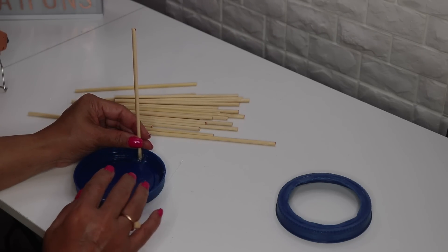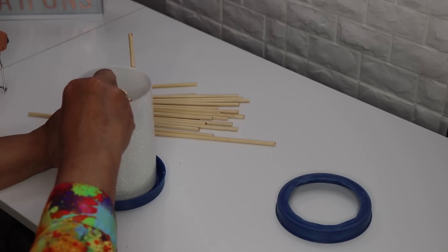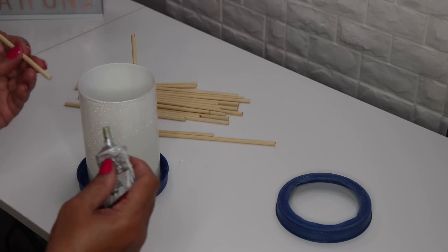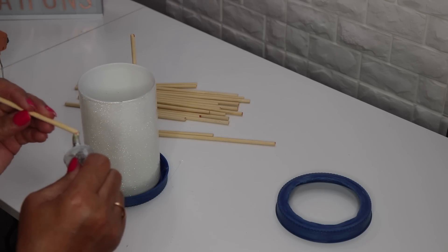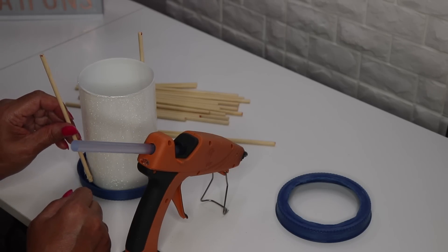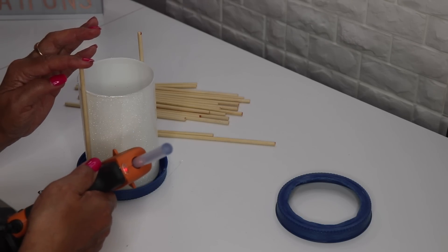It's still leaning a little bit so I'm going to put this right in the middle and this will give it something to hold on to. I'll take another stick directly across from that one. Now I'll add more hot glue.